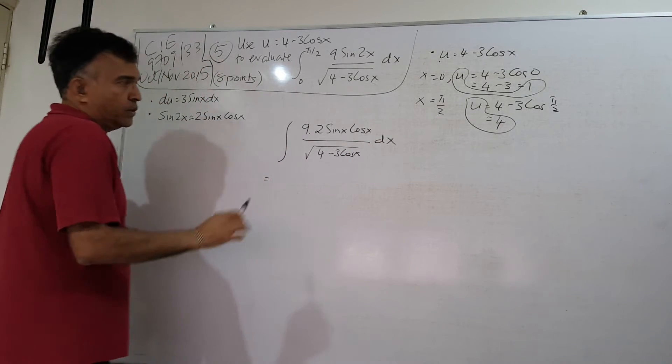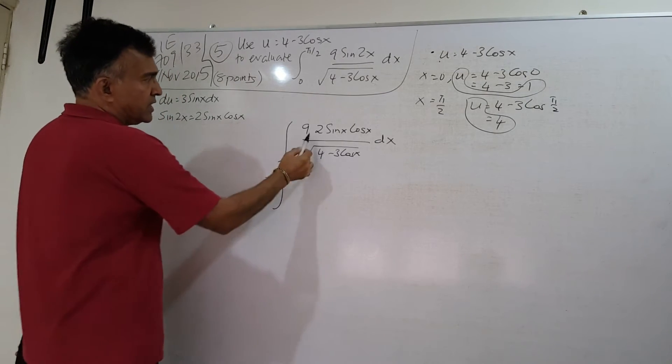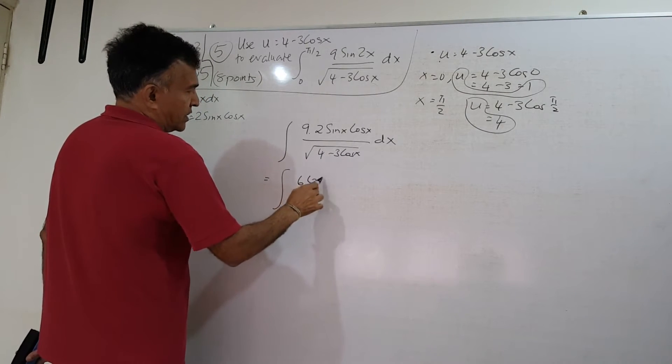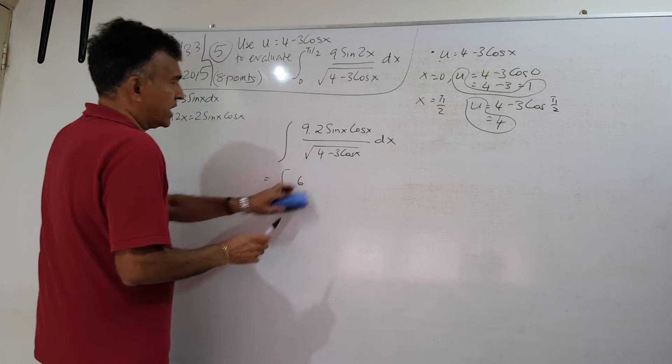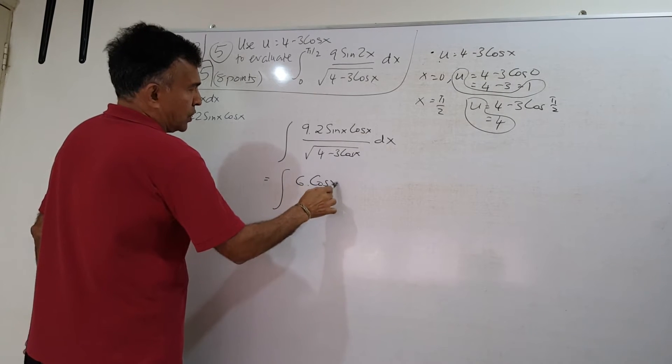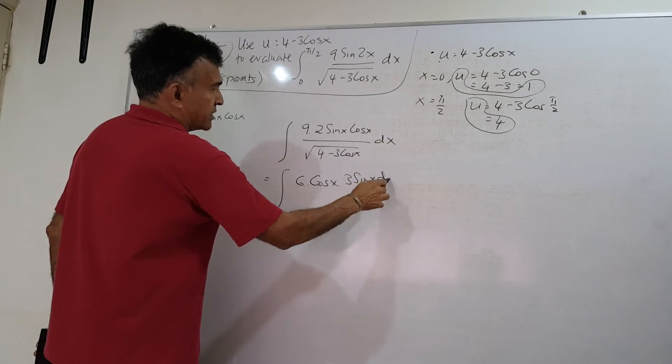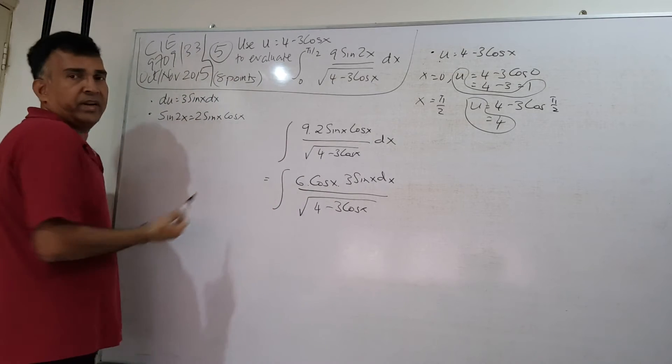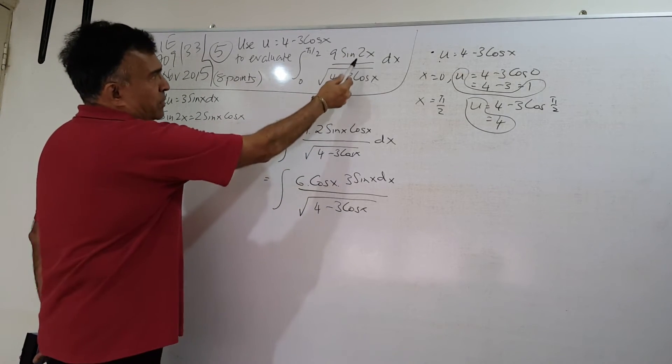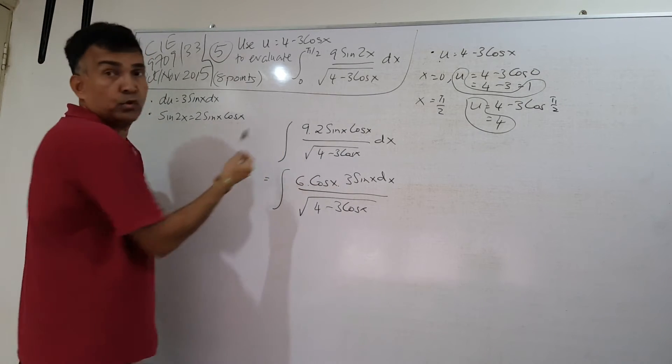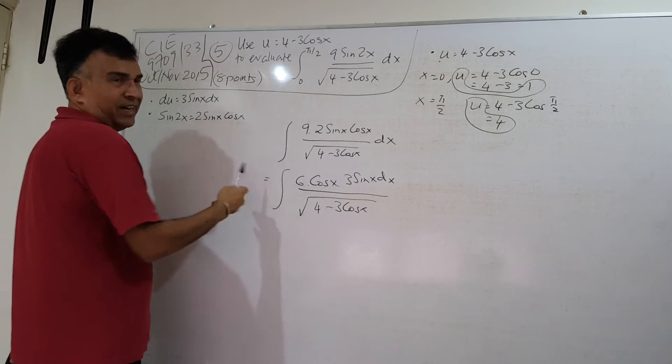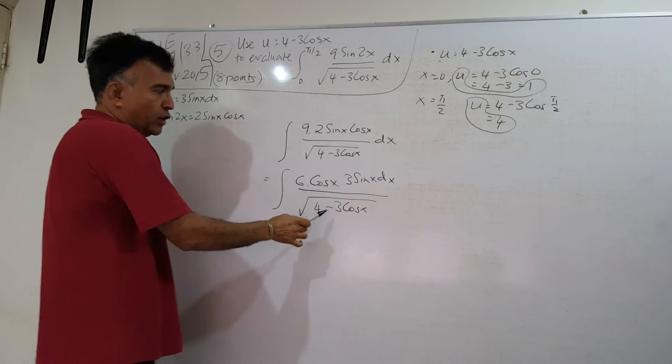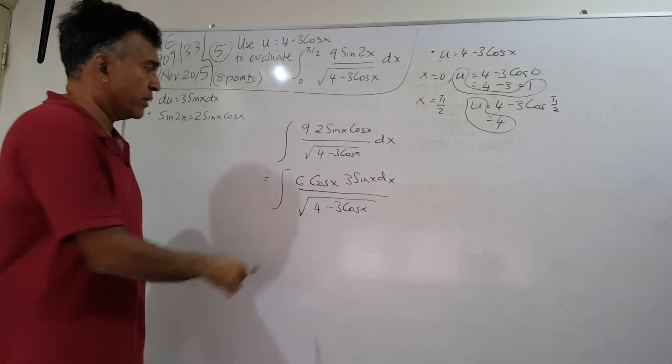Now let's do a little bit of rearrangement. So now I have, it might have to use 18. I'm going to write it as 6 times cos x, 3 sin x dx, over the square root of 4 minus 3 cos x. What have I done here? I've replaced sin 2x with 2 sin x cos x. There's a 9 here. 9 times 2 is 18. I've broken that 18 up into 6 times 3. So I've written 6 cos x times 3 sin x. So nothing has changed.